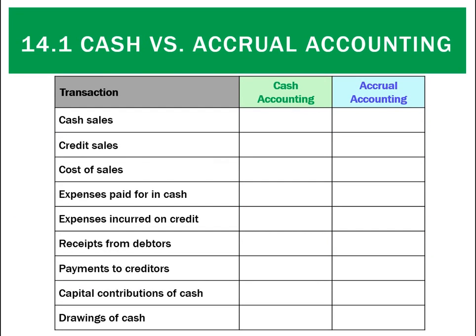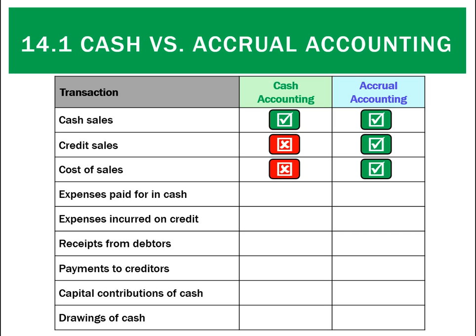We have a bunch of transactions where we look at their impact on cash accounting and then accrual accounting. Cash sales are recognized in both — revenue is both received and earned. Credit sales wouldn't be recorded under cash accounting because they haven't been received, but under accrual accounting they would. Cost of sales — no cash is actually paid, however it is an expense. Expenses paid in cash are recognized in both, but expenses incurred on credit, such as rent used this period but paid next period, won't go in cash accounting but will go in accrual accounting.